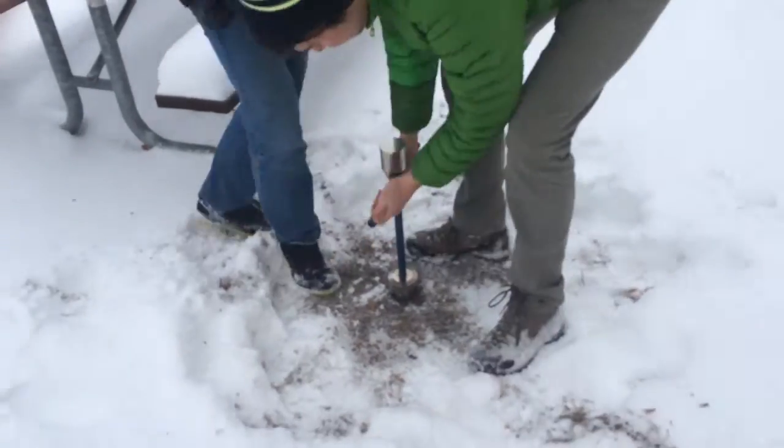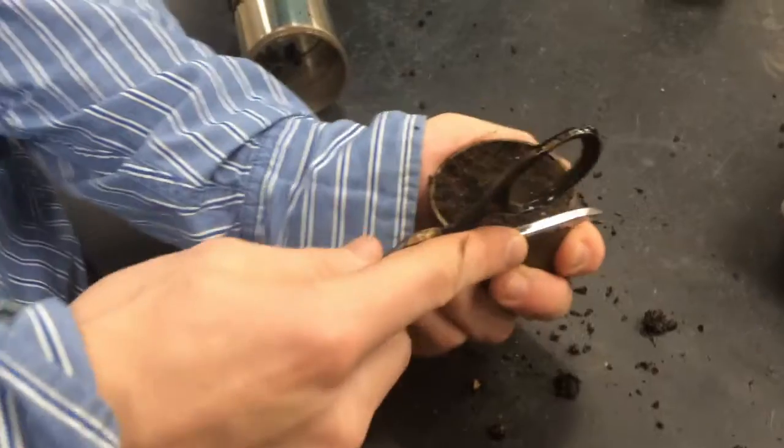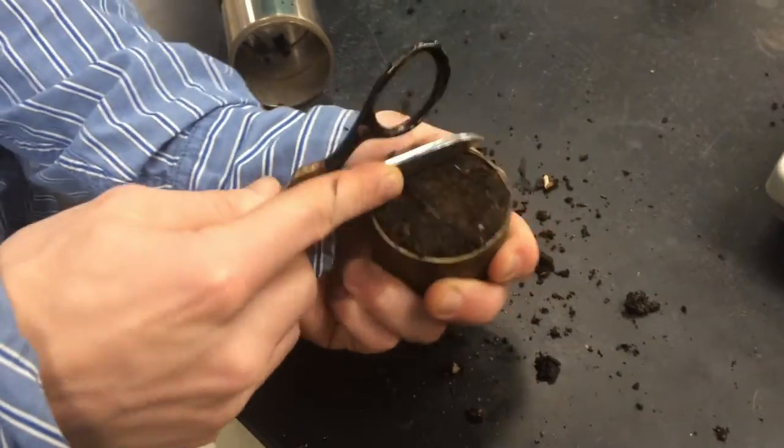After the core has been collected, remove a soil filled ring from the core sampler and use a knife to flatten the edges.